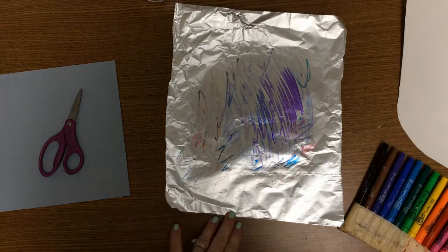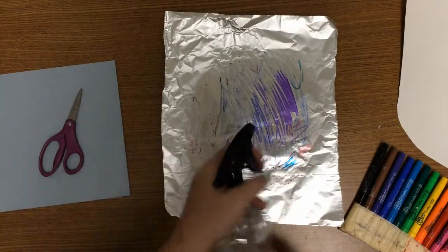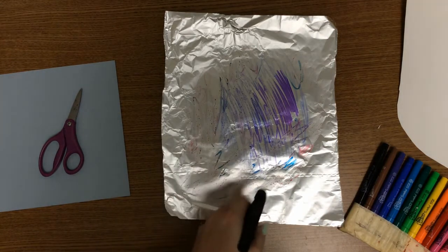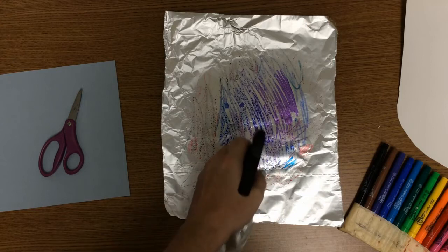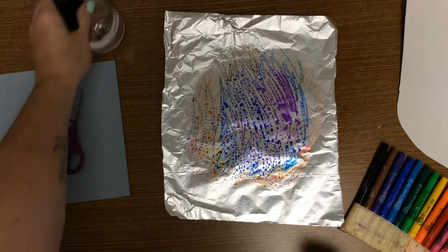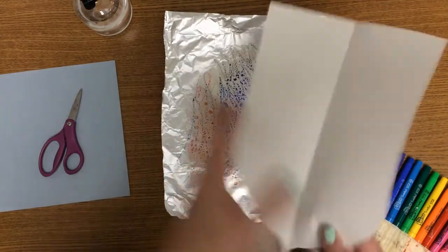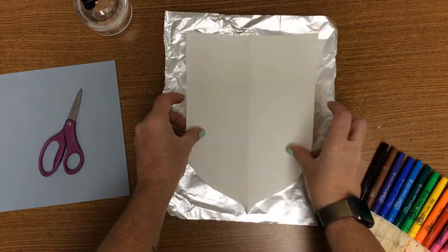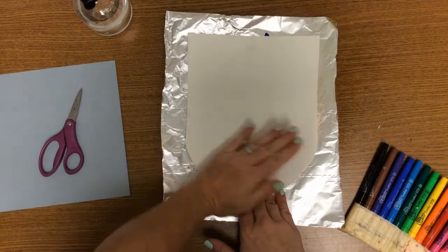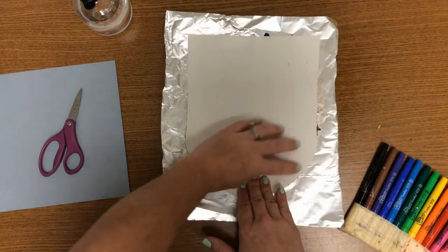Once you've colored your aluminum foil as best as you can, I'll come around and spray some water on your aluminum foil like this to wake up the markers. Then you're going to take your acorn, place it on top, and smooth on your piece of paper right here.